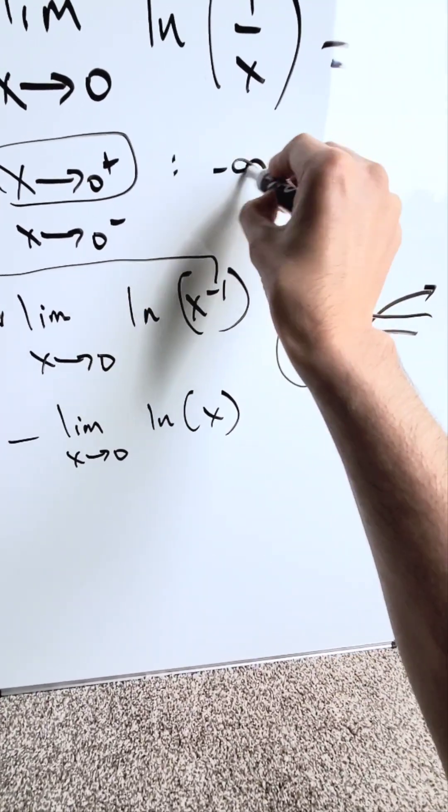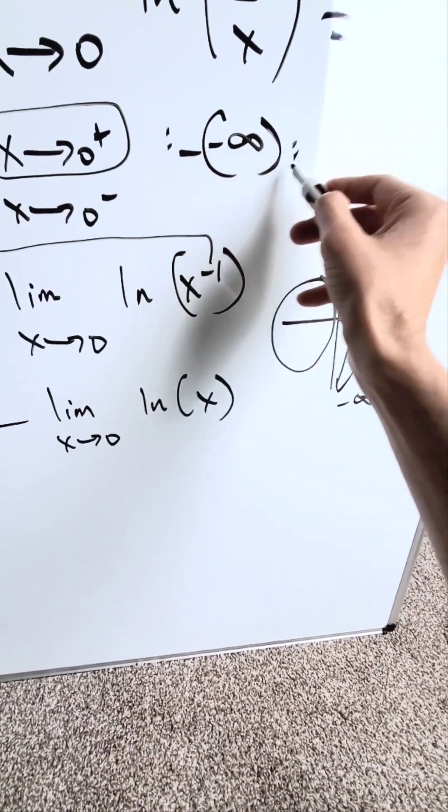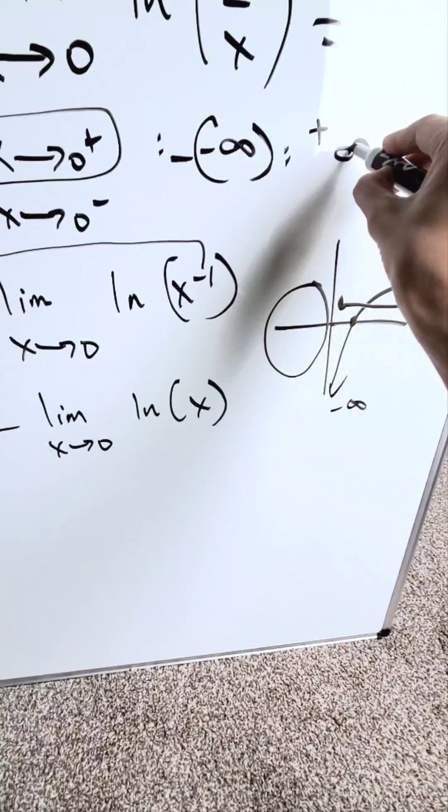We have minus infinity, but keep in mind there's a minus sitting outside. When you apply that, from the right-hand side, you get an answer of positive infinity.